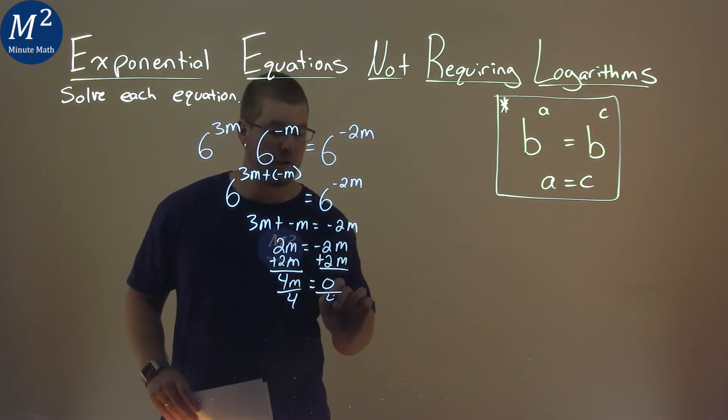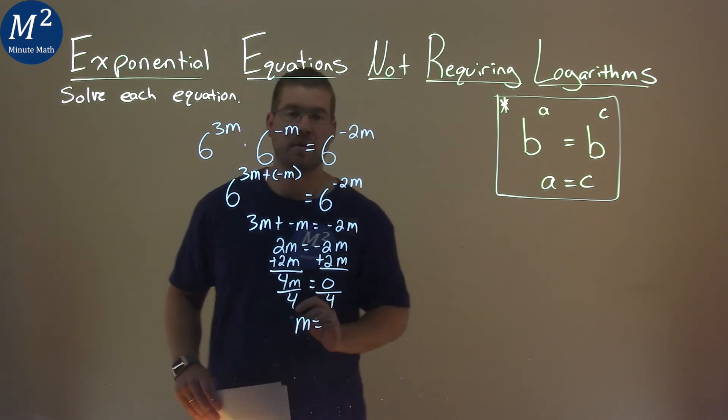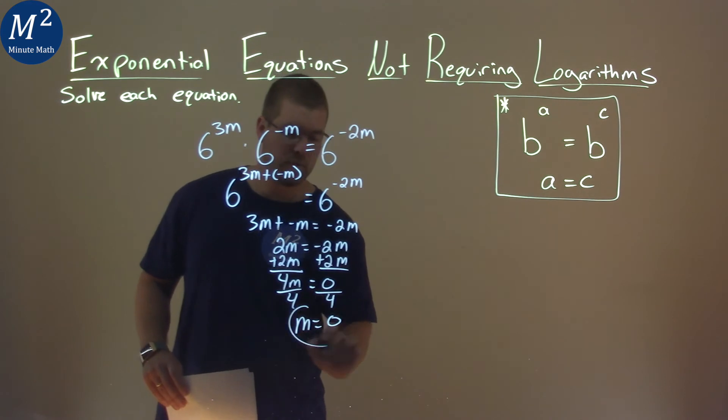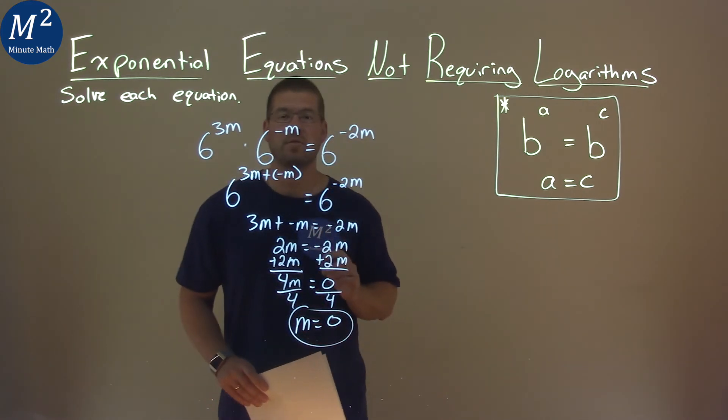Divide both sides by 4 to get m completely by itself. 0 divided by 4 is a 0, and so my final answer here is m equals 0.